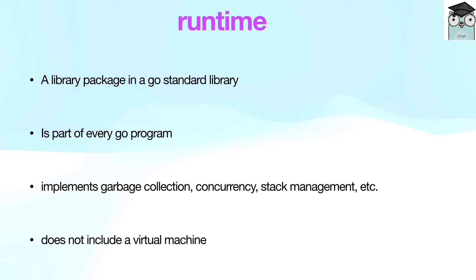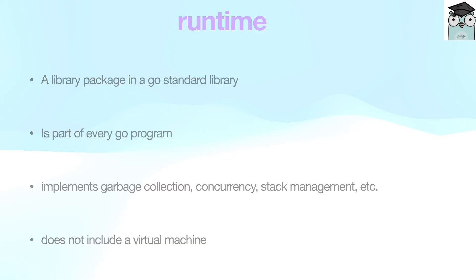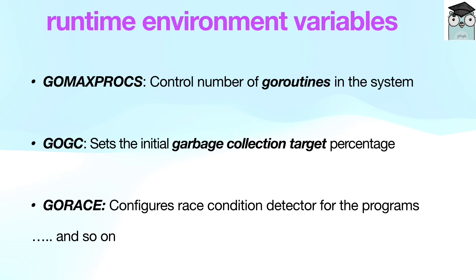Following are some Go environment variables used by the runtime library to control the behavior of Go programs at execution time: GOMAXPROCS to control the number of goroutines in the system, GOGC to set the initial garbage collection target percentage, GORACE to configure the race condition detector for programs, and so on.